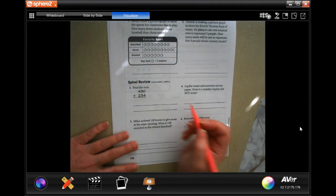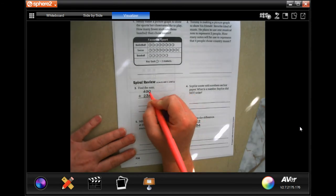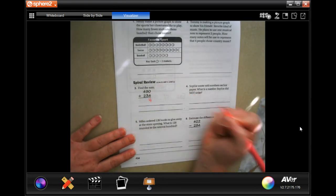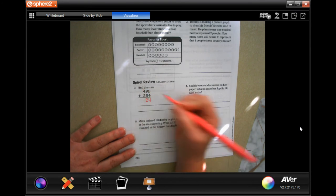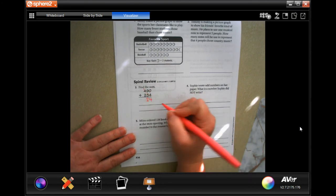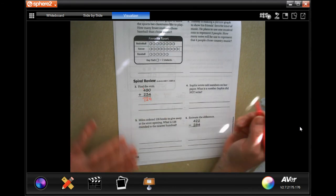So now we're going to go down and we're going to find the sum. Zero plus four is four. Nine plus three is twelve. We're going to carry that one. One plus four is five, plus two more is seven. Done.